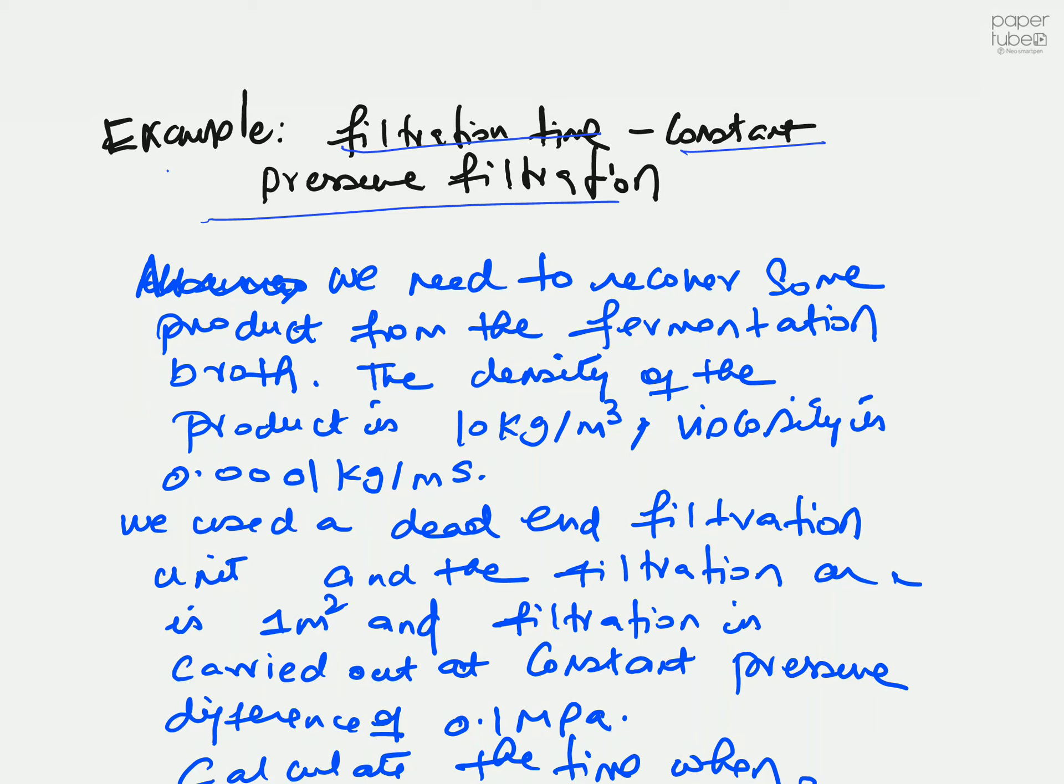We need to recover some product from the fermentation broth. We decided to use a filtration setup. In this case, you are going to use a dead-end filtration. The density of the product is 10 kilograms per meter cube, viscosity is 0.0001 kilograms per meter seconds, and the filtration area is 1 meter square.